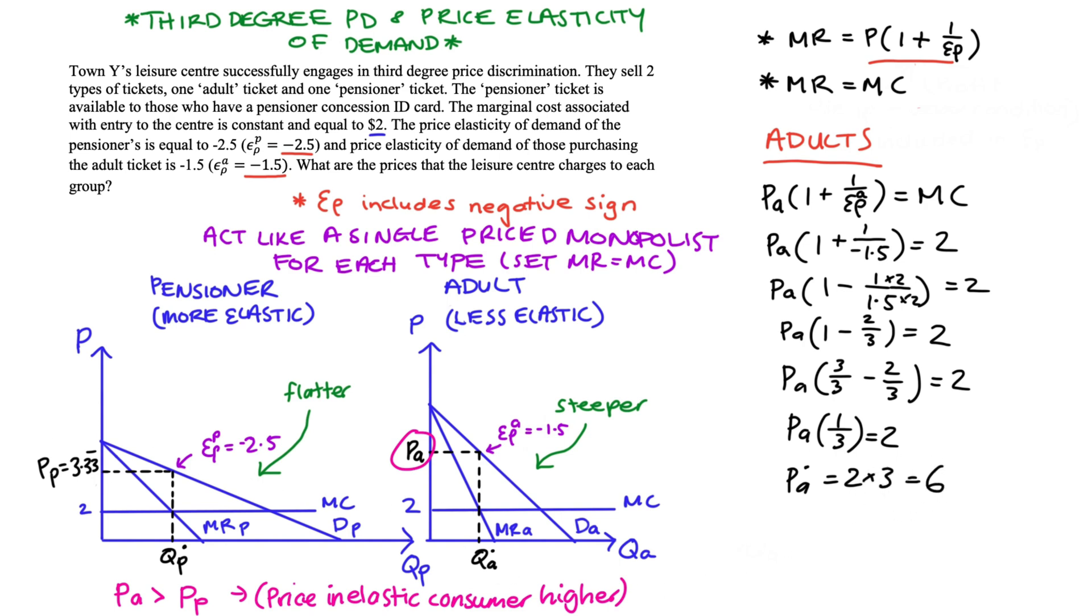As suspected, the price associated with the less elastic market, the adults, is bigger. It's larger than the price associated with the more elastic market, the pensioners. So that's it. That's how we find the prices when we're engaging in third degree price discrimination when we have information about the elasticity of demand.